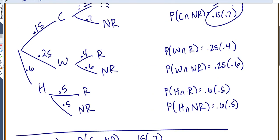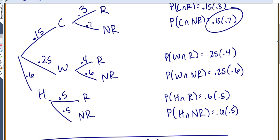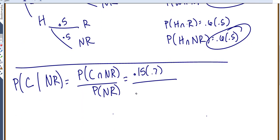Probability of not rain, though, will take more work. We need to find everything that includes not rain. So this one, this one, this one. We find everything that includes not rain and add them up. So that will be 0.15 times 0.7 plus 0.25 times 0.6 plus 0.6 times 0.5, which should give me 0.1891.